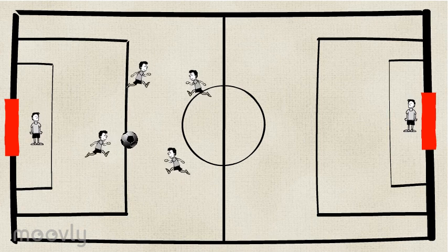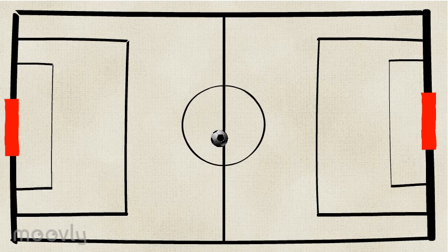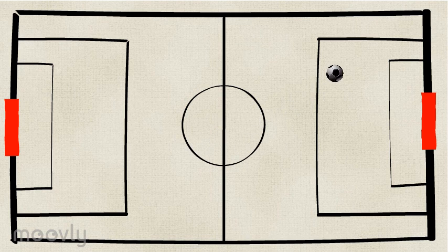But let's simplify this system by ignoring the players. Now the ball appears to be moving randomly, or stochastically, crossing over the lines and maybe occasionally entering the goal.